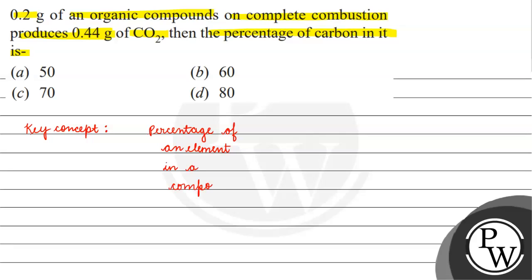If I want to find the percentage of an element in a compound, it will be the mass of that element in the compound divided by mass of compound times 100.